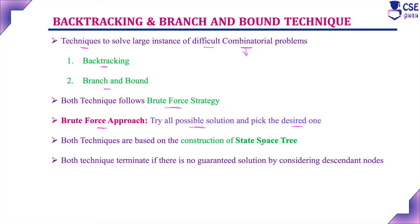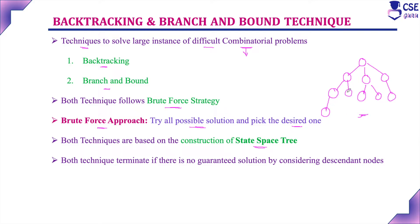Both techniques are based on the construction of a state space tree. A state space tree starts with the initial state for the given problem, and tries all possible solutions by constructing each level to find the feasible solution. Both techniques will terminate if there is no guaranteed solution by considering descendants. If considering a descendant does not provide a feasible solution, it won't continue that level.